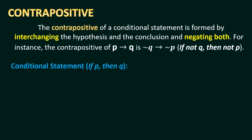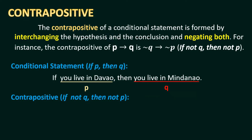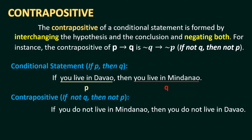For the conditional statement 'If you live in Davao, then you live in Mindanao,' our hypothesis is 'you live in Davao' and our conclusion is 'you live in Mindanao.' For the contrapositive — 'If not Q, then not P': 'If you do not live in Mindanao, then you do not live in Davao.' The conclusion from the conditional statement becomes the hypothesis here, and the hypothesis becomes the conclusion, both negated.